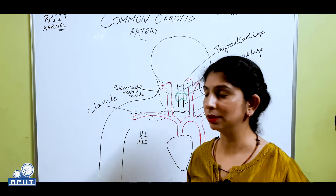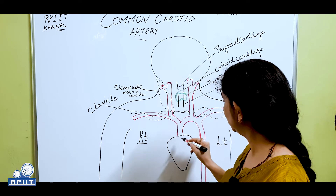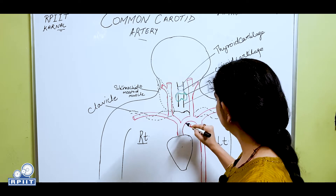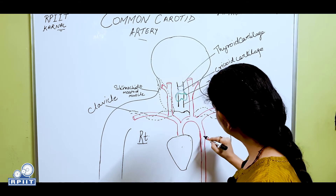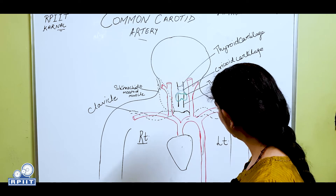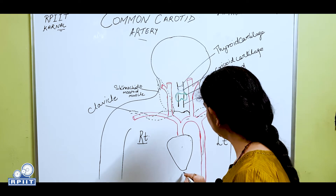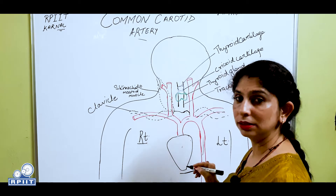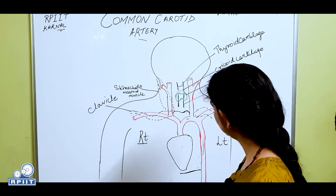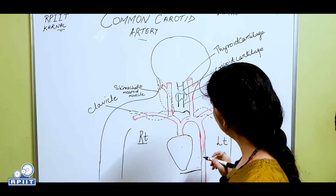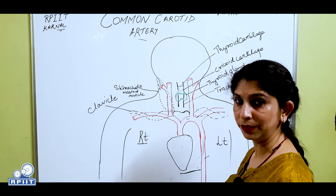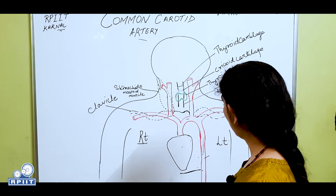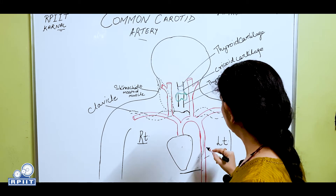Let's start from the basics. The aorta arises from the left ventricle. This is the arch of aorta and this is the descending aorta. The diaphragm divides the descending aorta — above the diaphragm it is known as the thoracic aorta, and below it is known as the abdominal descending aorta.